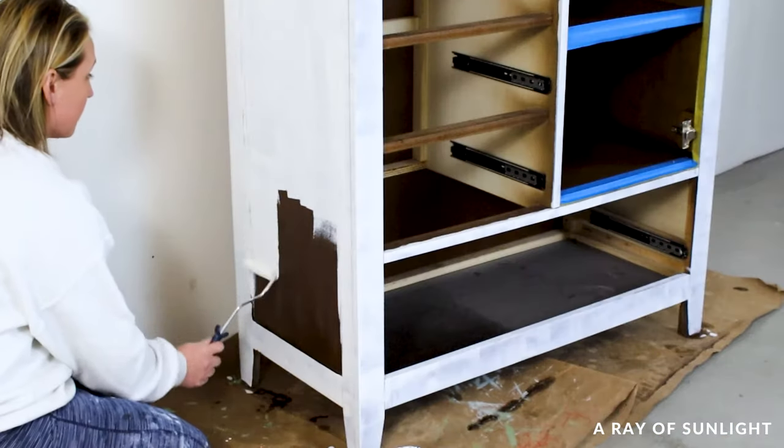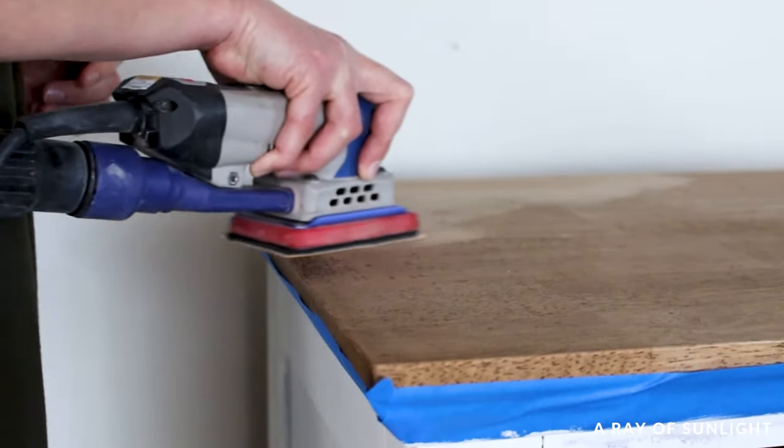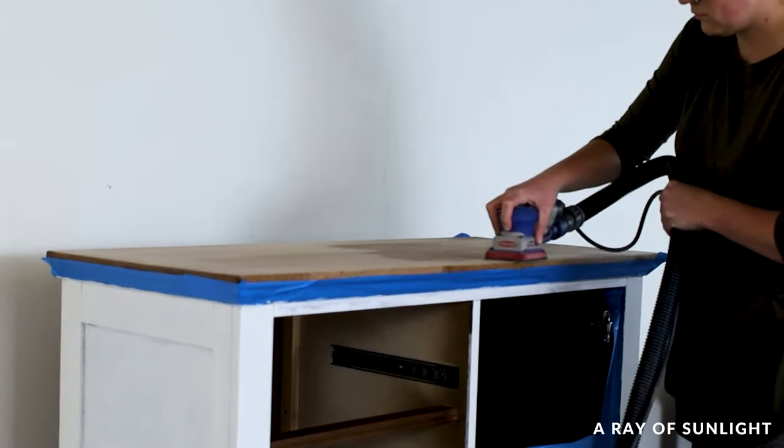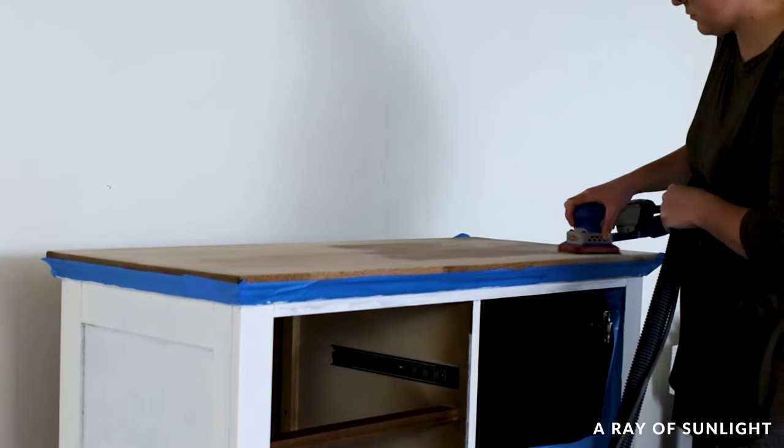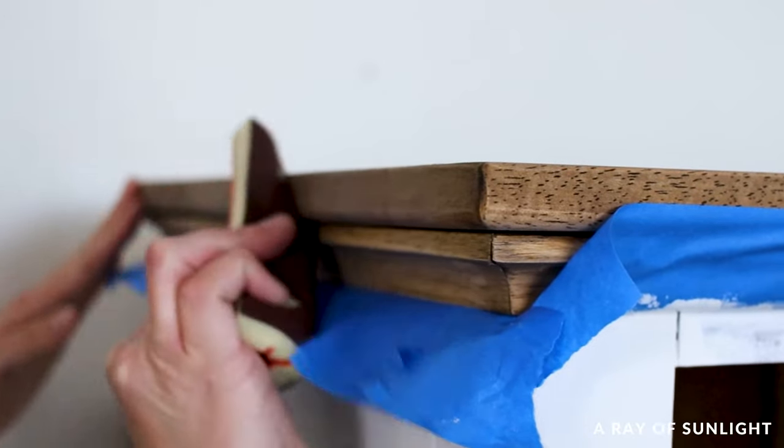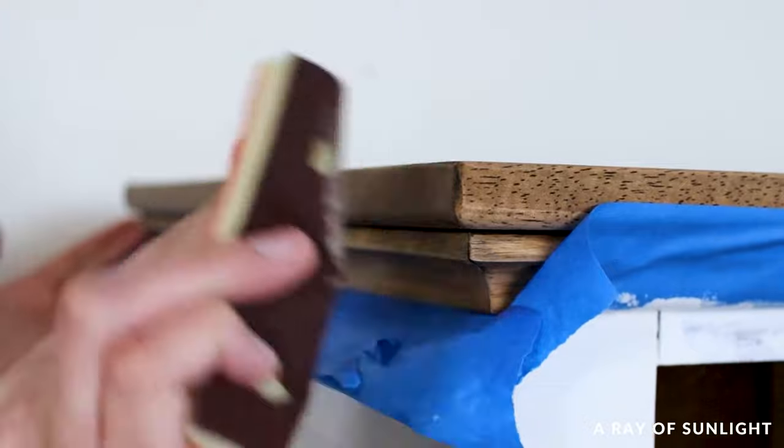We finished priming and then the next day we were able to sand the top with 220 grit sandpaper to smooth out the wood and remove a little bit of finish that was left over. I also used some medium grit foam sanding pads to sand the curves on the side of the dresser by hand.